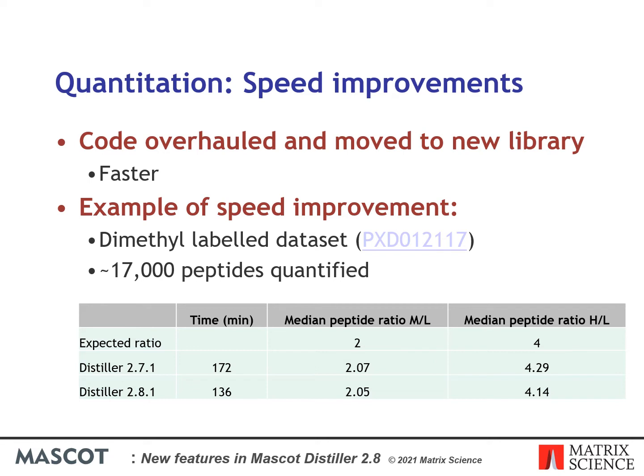The dataset contains approximately 17,000 quantifiable peptides. The median peptide ratios for medium over light and heavy over light are similar from both versions of the software, although results are slightly better with Distiller 2.8. More significantly, Distiller 2.8 was approximately 20% faster, taking 36 minutes less time to complete.